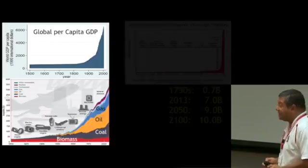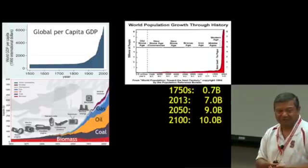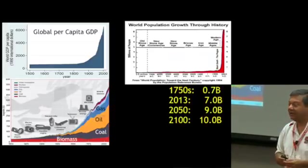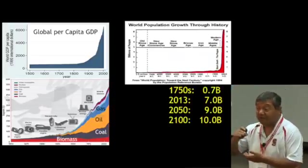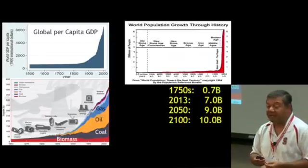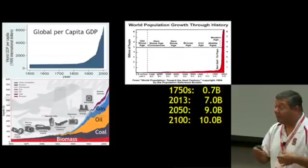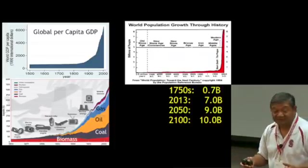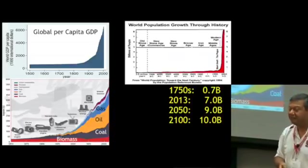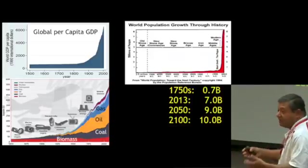There's another exponential increase that has happened. That's global population. At the beginning of the Industrial Revolution, we had 700 million people around the world. Today we have 7 billion. And by 2050, it's going to be 9 billion, roughly. By the end of the century, it's going to be 10 billion, with a big error bar. And that error bar depends on the women, the fertility of the women in Africa. 99% of the population growth is going to be in Asia and Africa.